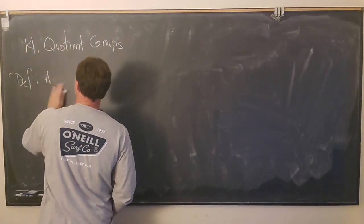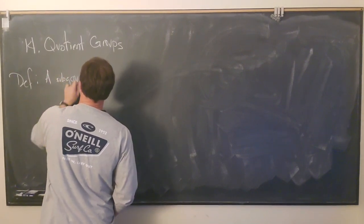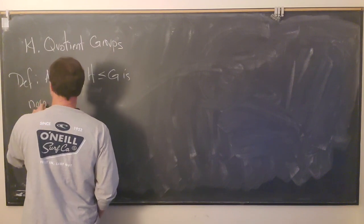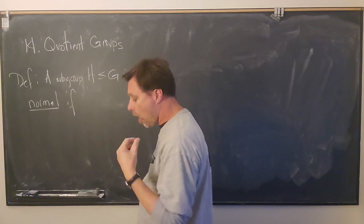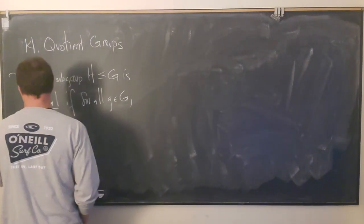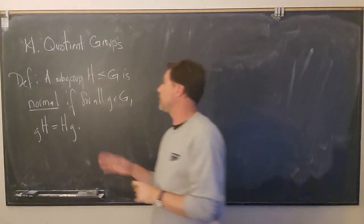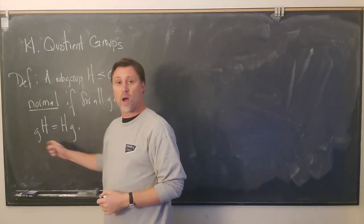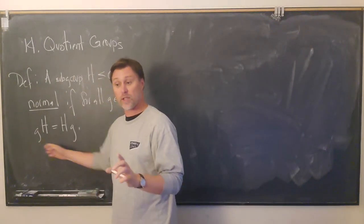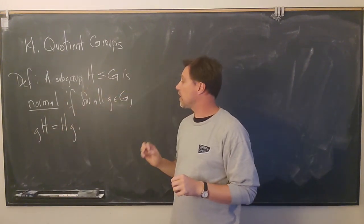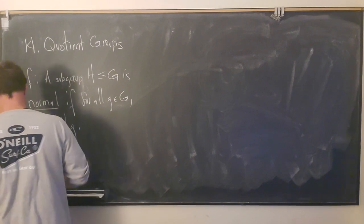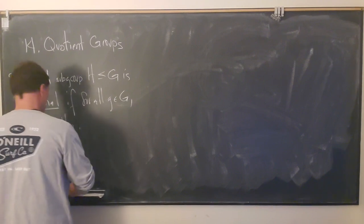Let's start off with a definition. A subgroup H of G is normal if the left cosets always equal the right cosets — that is, for all little g in capital G, gH is equal to Hg. This is something that sometimes happens, sometimes does not. In the case that for every choice of element in G, the corresponding left and right cosets are equal for all possible elements, then you say that the subgroup H is normal.